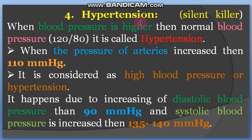CVD number four is hypertension, which is also called the silent killer. It is when blood pressure is higher than normal. Normal blood pressure is 120 by 80 mmHg.